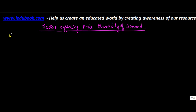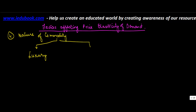The fourth factor which affects the price elasticity of demand is the nature of commodity. When we say nature of a commodity, we mean whether a commodity is a luxury or it is a necessity. The price elasticity of demand is likely to be low for necessities, whereas it is high for luxuries.